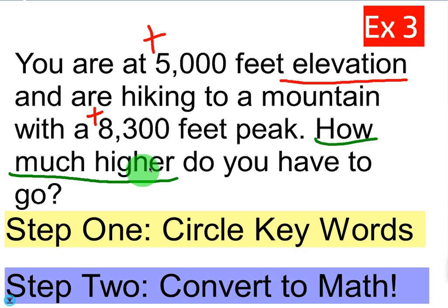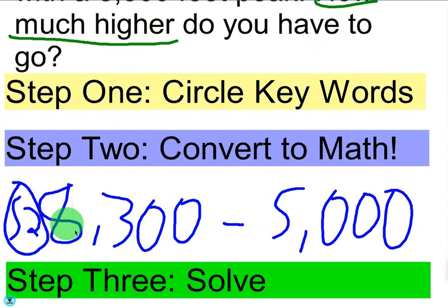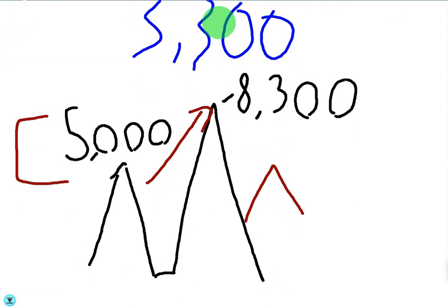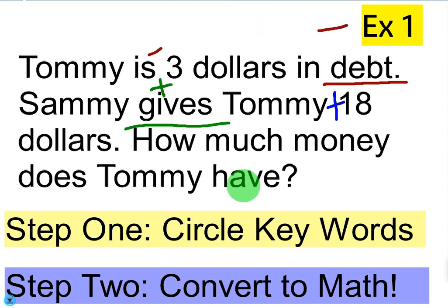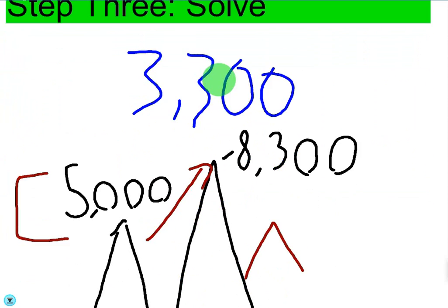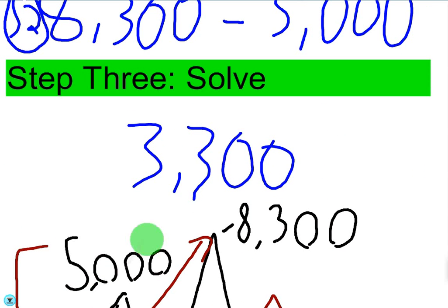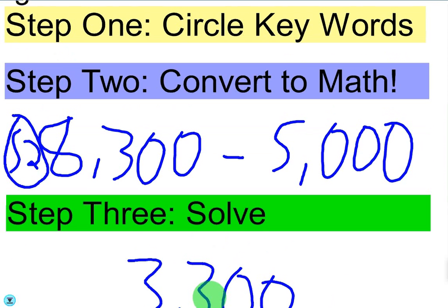We underline 'how much higher' because we're trying to get from 5,000 to 8,300 — we're talking about a gap, which means we're going to be subtracting. When we convert to math, 8,300 is our destination and 5,000 is where we are, so we subtract these two to figure out how much higher we have to hike. The answer is 3,300 feet. Sometimes with these problems it does help to draw a picture. You can see if you started at 5,000 and need to get to 8,300 there's a gap, and you take the top and subtract the smaller.